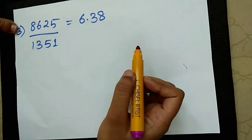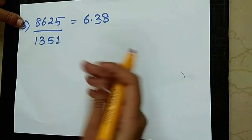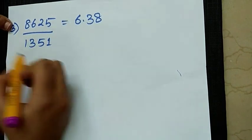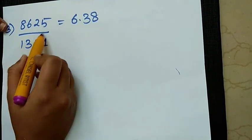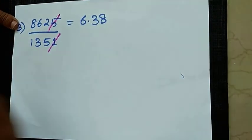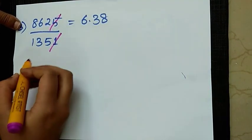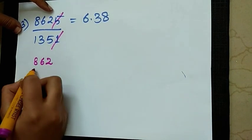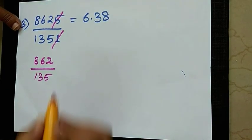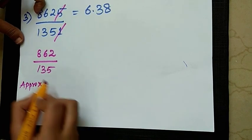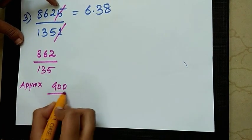This is the third example. Every division method is useful here. The number is 862551 by 351. How do we get the answer? We take 862 by 135. The approximate value is 900 by 150.